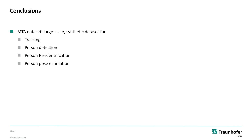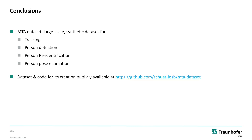We created a dataset called the MTA dataset, which is a large-scale synthetic dataset for tracking, person detection, person re-identification, and person pose estimation. The dataset and code for its creation are publicly available at the following link. We also created a modular tracking system based on aggregation of track distance measures. Thanks for your attention.